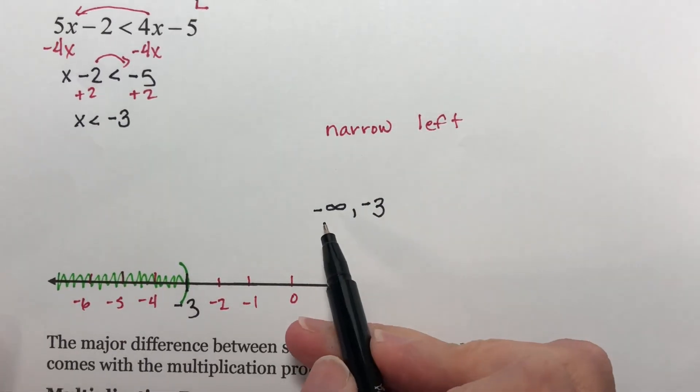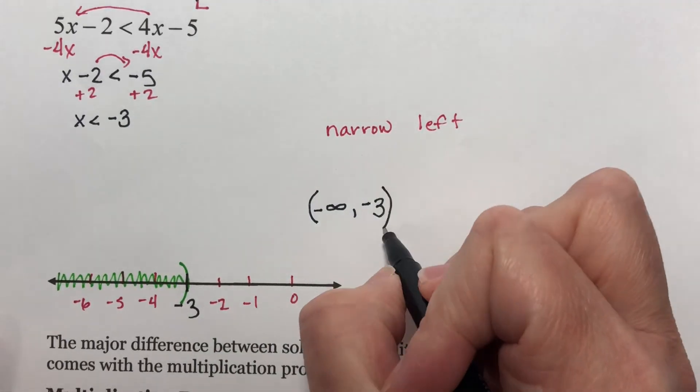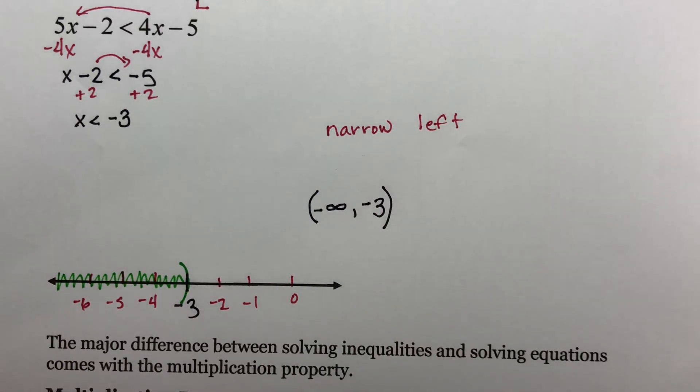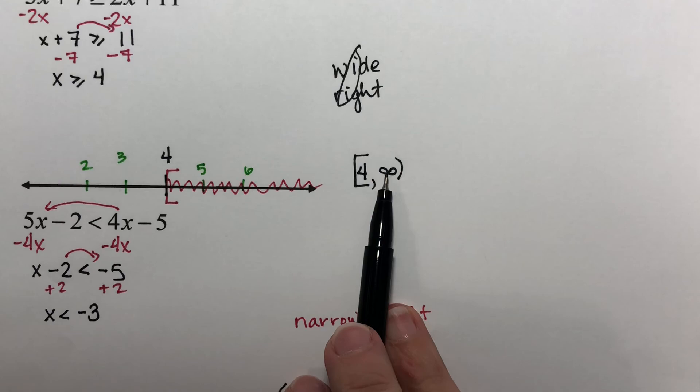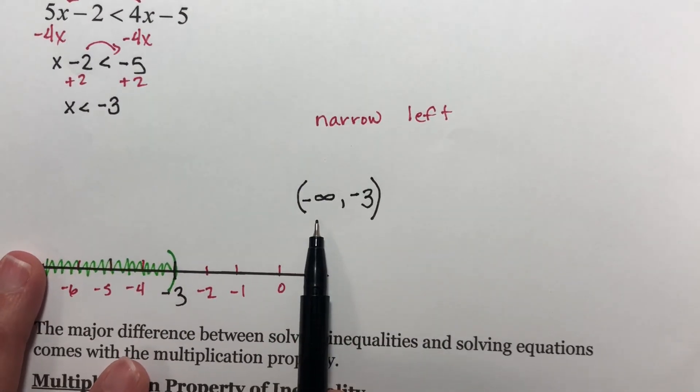Infinities, whether negative or positive, always get parentheses. This one had a parentheses here, so does this. Your negative infinity will never be on the right-hand side of an interval notation. A positive infinity will never be on the left. So positive infinity only happens on the right, negative infinity only happens on the left.